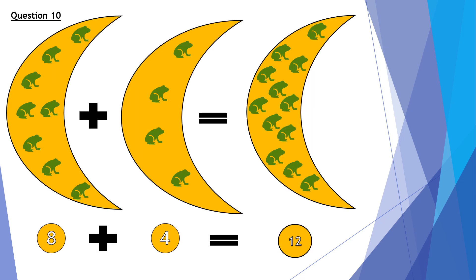Question 10, and last question. 8 frogs plus 4 frogs equals 12 frogs. So in the number form, 8 plus 4 equals 12.